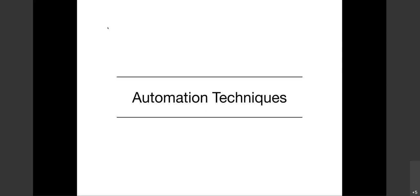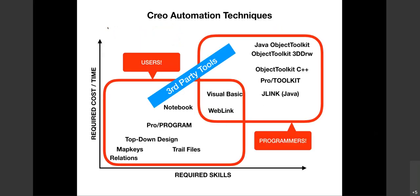Let's break down the various automation techniques people typically use. We've been using Creo since REV7, so we've seen a lot of the evolution of APIs, tools, capabilities, and techniques. There's a spectrum from acquired skills versus cost and time: basic automations like map keys, relations, trail files; more adventurous users dig into ProProgram; and the really adventurous get into Pro Toolkit and Visual Basic. Third-party tools are typically designed to bridge that gap between required capability and reducing the cost of managing automation with Creo.